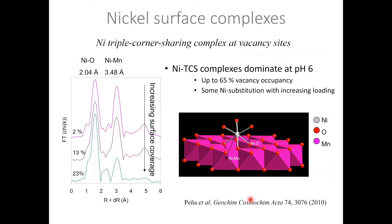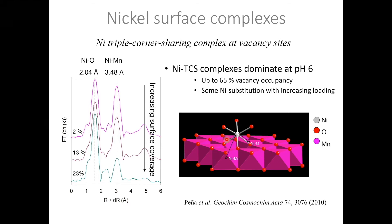Here I'm showing EXAFS spectra collected from samples where the nickel loading increases from 2% to 23% relative to moles of manganese. We see characteristic peaks for the nickel-oxygen and nickel-manganese shells. This nickel-manganese shell at 3.48 Å is characteristic of nickel bound as a triple-corner-sharing complex at vacancy sites. As we increase the nickel loading, we find that this triple-corner-sharing complex dominates at pH 6. When we get above a loading of 23%, we see a second bonding environment consistent with the substitution of nickel into the sheet, and a high occupancy of the vacancy sites.